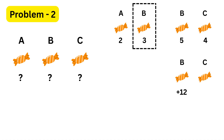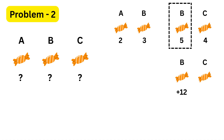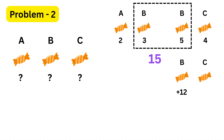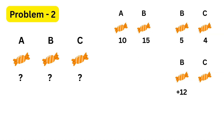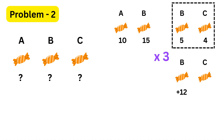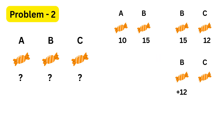In the first ratio, B has three parts. In the second ratio, B has five parts. So again, we'll make both B values fifteen. We multiply the first ratio by five, which gives us A to B equals ten to fifteen. Then we multiply the second ratio by three, which gives us B to C equals fifteen to twelve. So the combined ratio becomes A to B to C equals ten to fifteen to twelve.